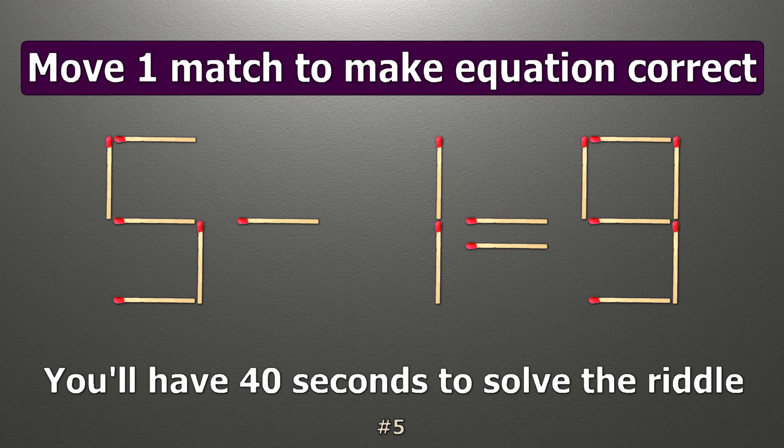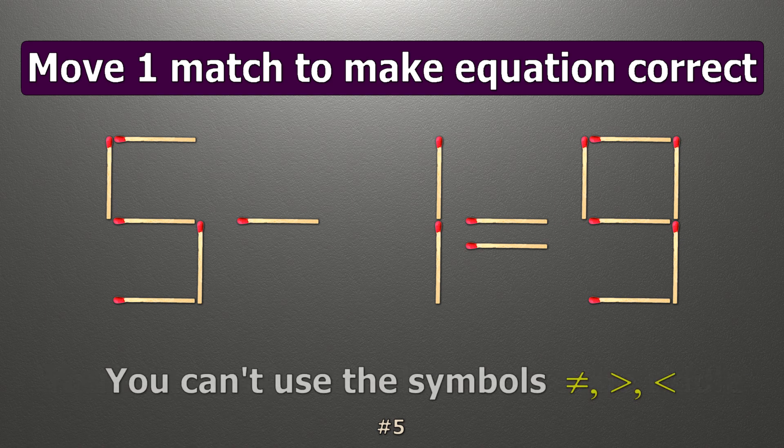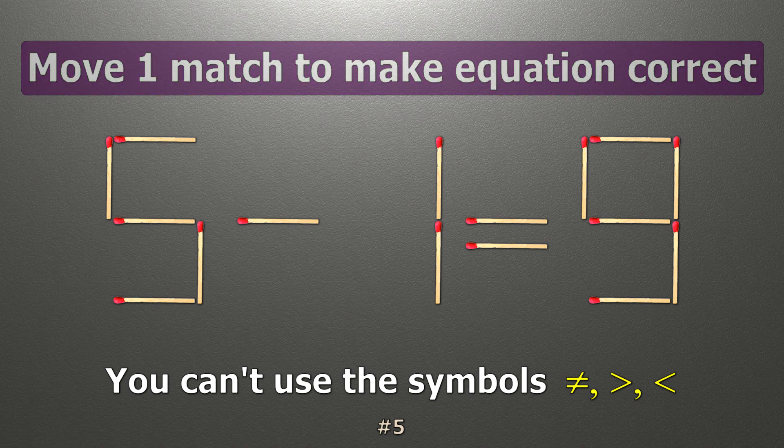We have the equality 5 minus 1 equals 9. Our equality is wrong. We need to move 2 matches to make our equality correct.